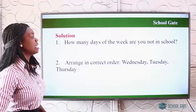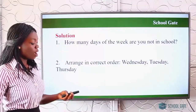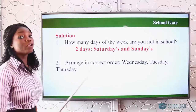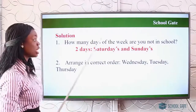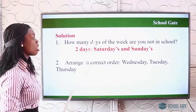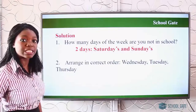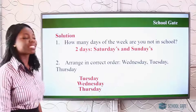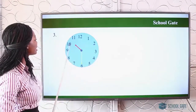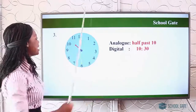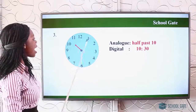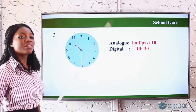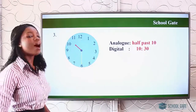Our solutions. We go to school from Monday to Friday — that's five days. So how many days are you not in school? Two days: you're not in school on Saturday and Sunday. Arrange in correct order: Wednesday, Tuesday, Thursday — Tuesday comes first, followed by Wednesday, followed by Thursday. For the clock, the longest hand is on six and the short hand is between ten and eleven. In analog, write it as half past ten. In digital, the minute hand is on six, so you count five, ten, fifteen, twenty, twenty-five, thirty — and the short hand is on ten — so it is written as ten thirty.